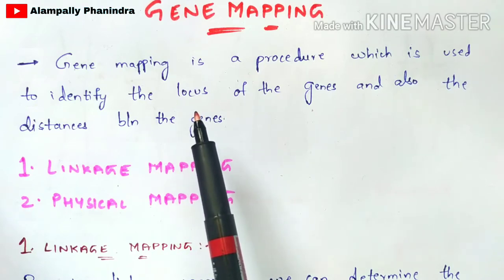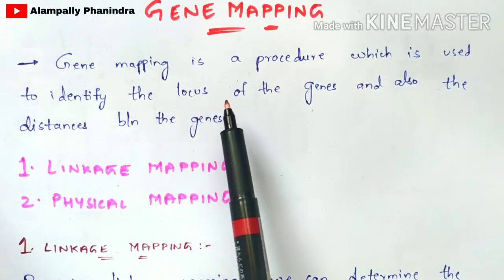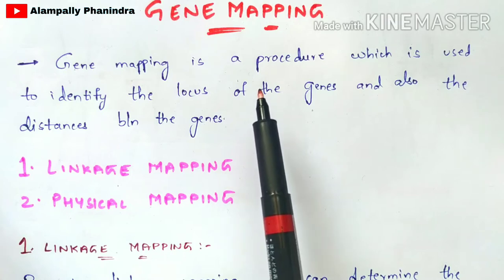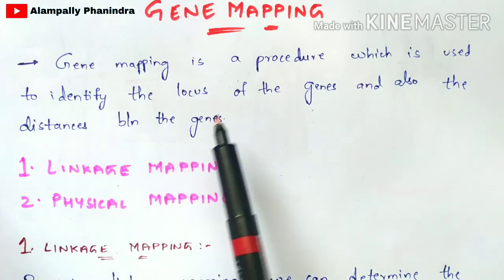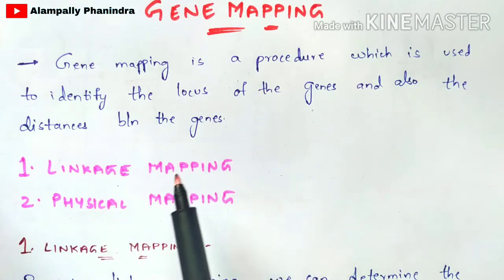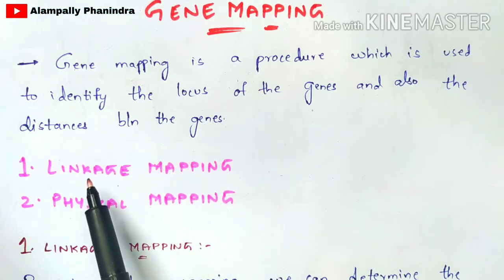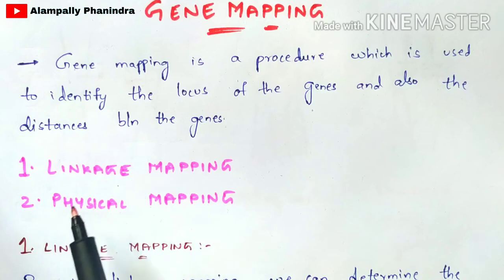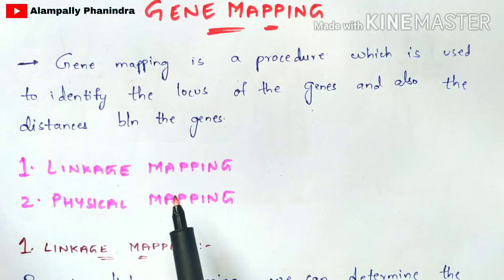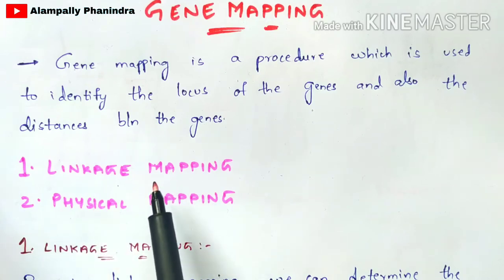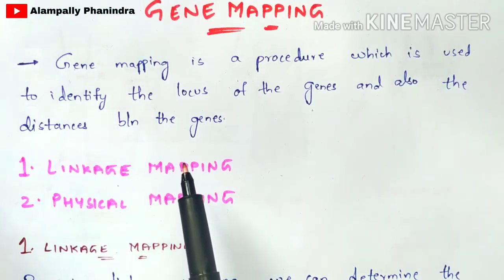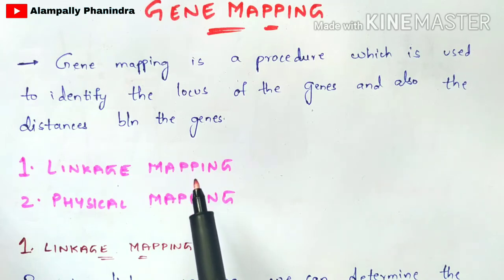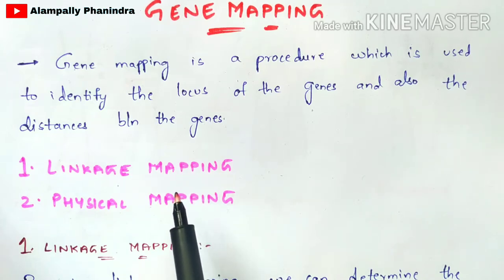Based on this property, gene mapping can be classified into two types: linkage mapping and physical mapping. These are the two types of mapping which are mainly used to determine the locus of the gene and also the distance between genes.